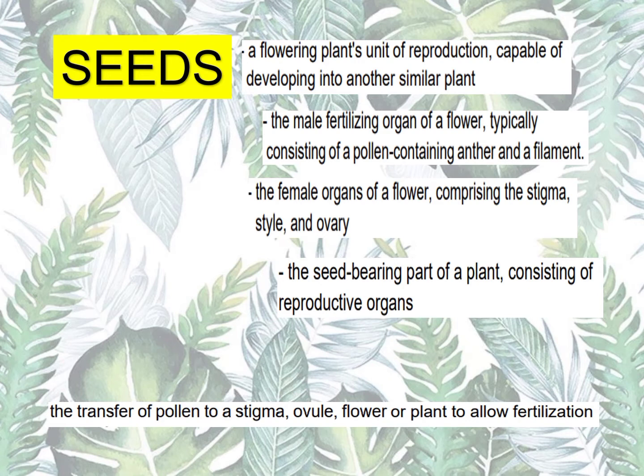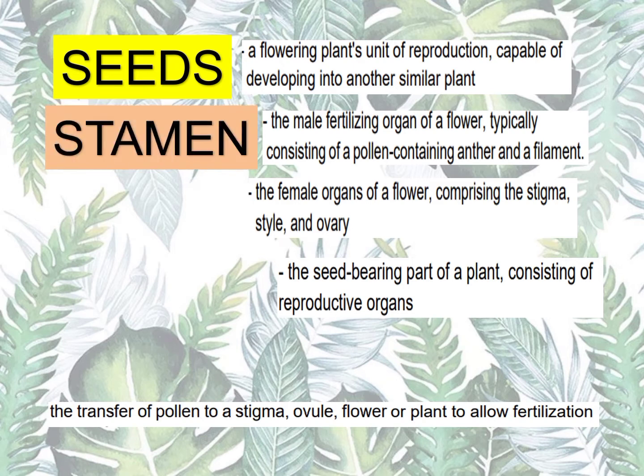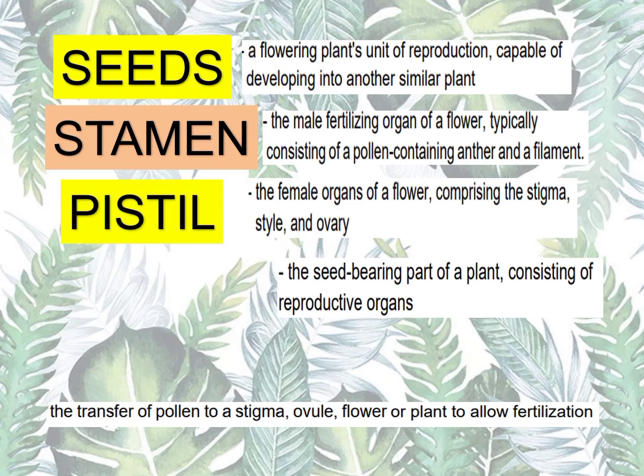The male fertilizing organ of a flower, typically consisting of a pollen-containing anther and a filament, is the stamen. The female organs of a flower, comprising the stigma, style, and ovary — that's the pistil.